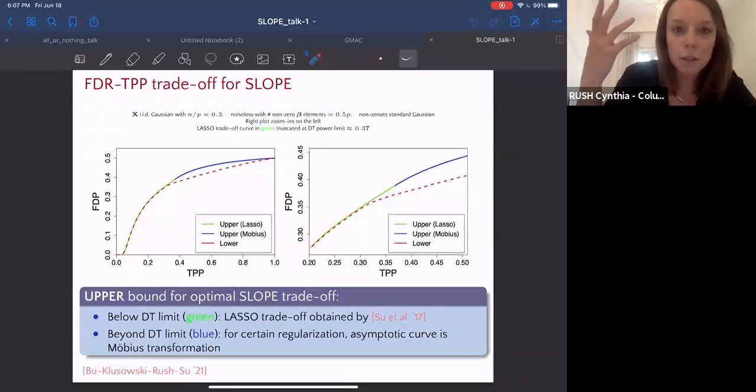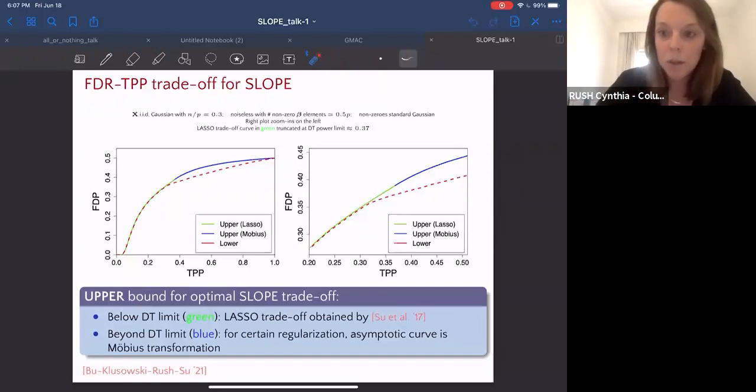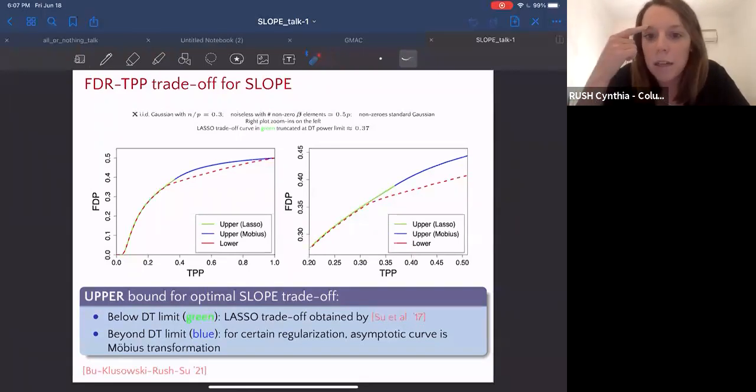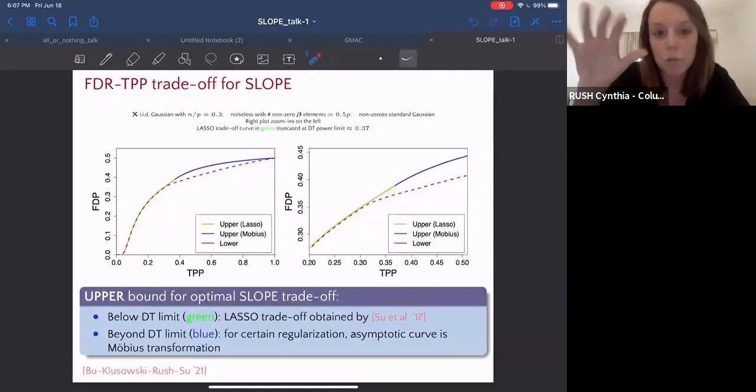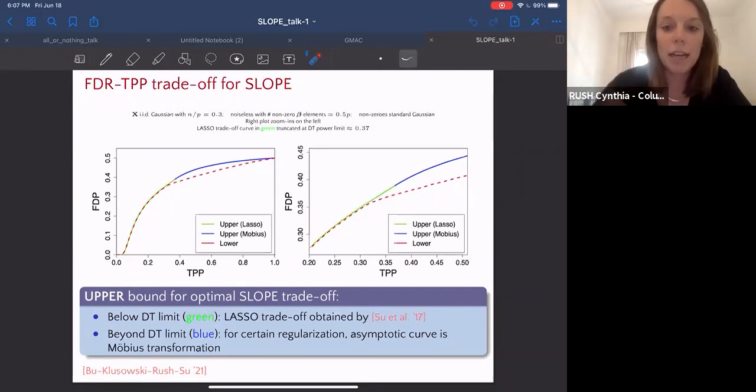Below the DT power limit, the upper bound is simply given by the corresponding curve for the lasso. This is green on the slide, just recognizing that the lasso is an instance of SLOPE. The fact that the lasso can achieve these values means that SLOPE must be able to do it at least as good. The other part of the upper bound above the DT power limit, which is the blue case, it turns out that the shape of curve is a Mobius transform. I'm going to discuss the proof of the upper bound, and as I mentioned, it's constructive in the sense that it specifies a simple regularization, and then it uses the AMP analysis to demonstrate that such a regularization achieves these FTP TPP pairs.